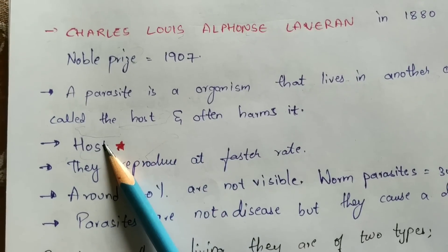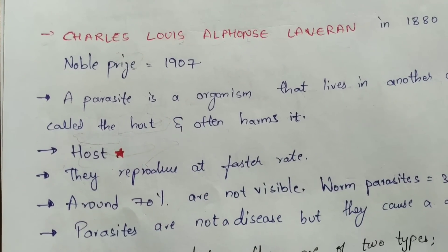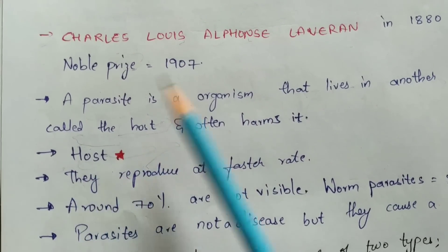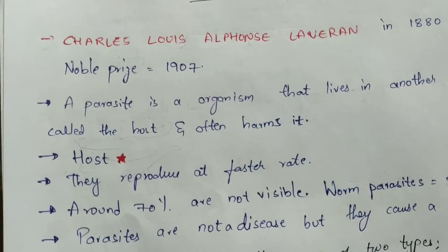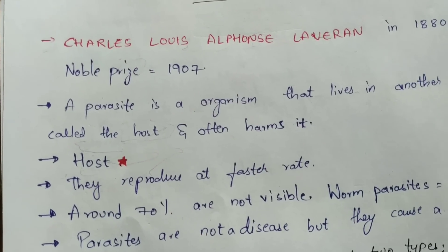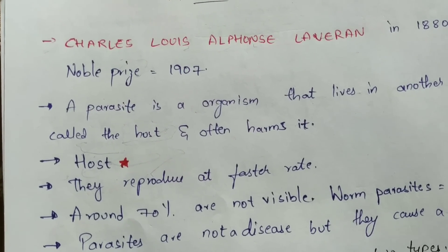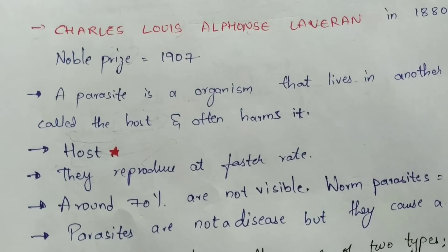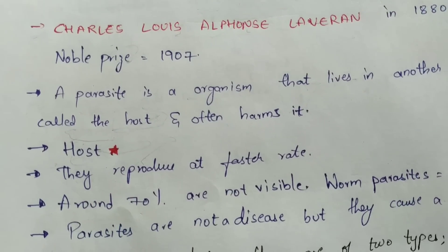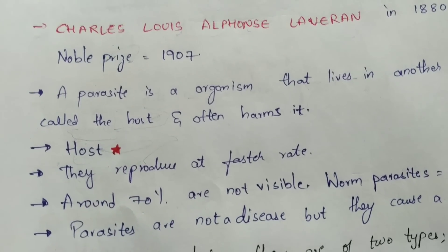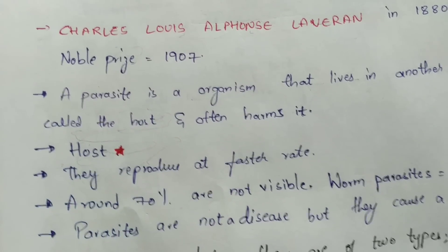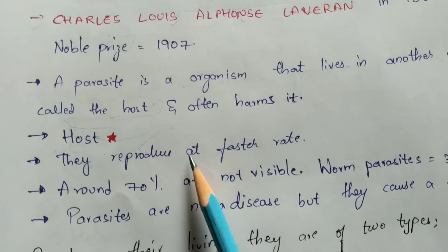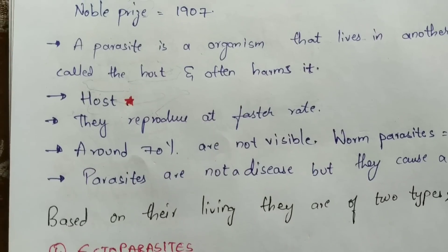The host — humans and animals — plays a major role in the living of parasites. Without a host, parasites cannot survive, because the reproduction of parasites takes place in the intestine of the host's body. Digestive enzymes produced in our body provide food material for the parasites, and parasites reproduce at a very fast rate.